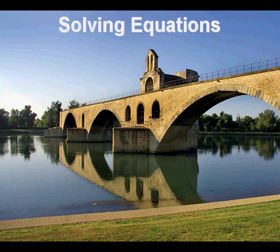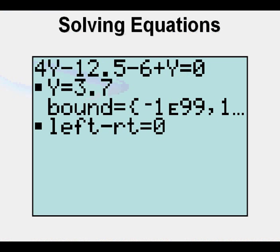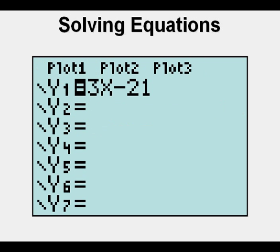We've looked at the magic bridge method where things are moved across the bridge until the letter is by itself. We learned about the equation solver operation on the graphing calculator that solves for an unknown if we can get one side equal to zero first.